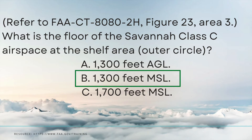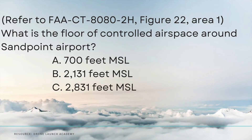Now let's look at the very last example problem. It says refer to Figure 22, Area 1. What is the floor of controlled airspace around Sandpoint Airport? Our three choices are 700 feet mean sea level, 2,131 feet mean sea level, and 2,831 feet mean sea level. All of these answer options are in mean sea level — we're not dealing with any above-ground-level options. Let's go look at Figure 22, Area 1 and find the answer.